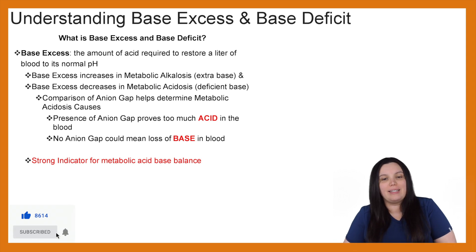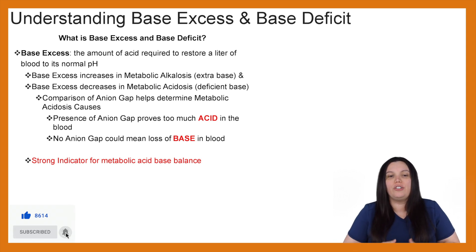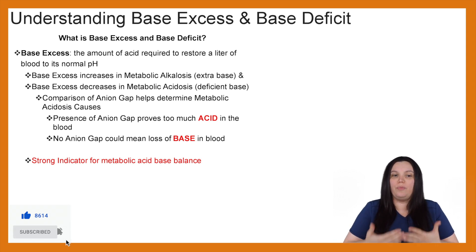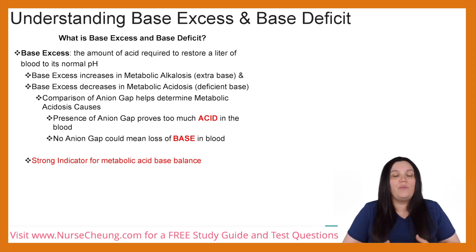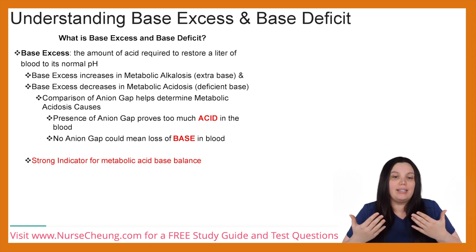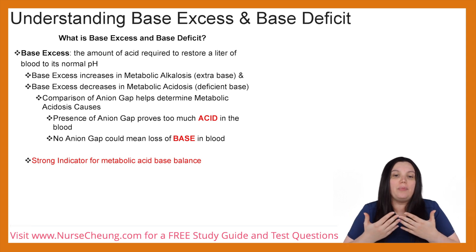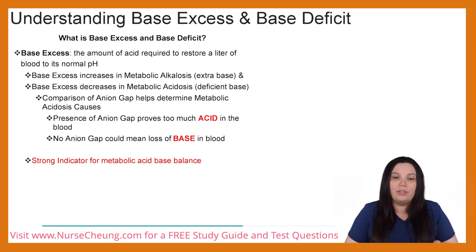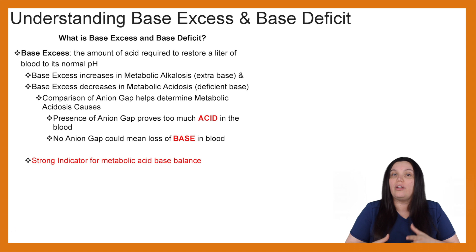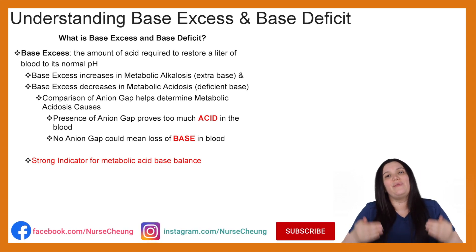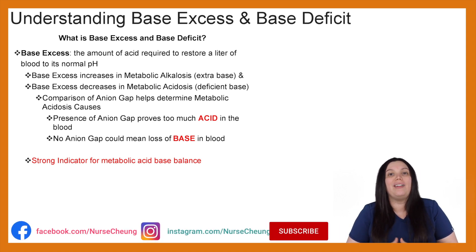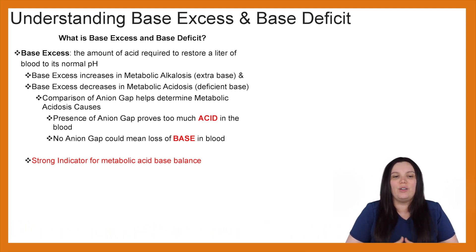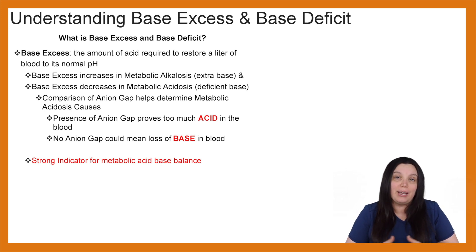Base excess is the amount of acid required to restore a liter of blood to its normal pH. If it increases, we have metabolic alkalosis because of all of that extra base. Whereas if it decreases, we know we have metabolic acidosis because we're deficient in that base.